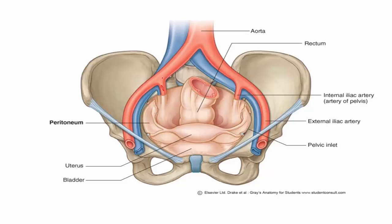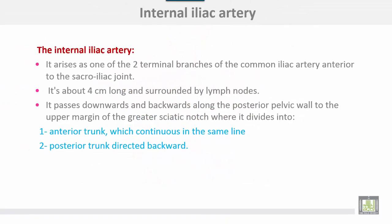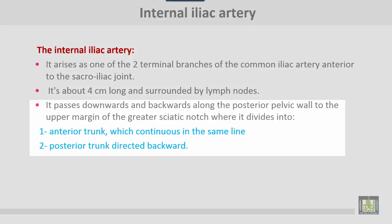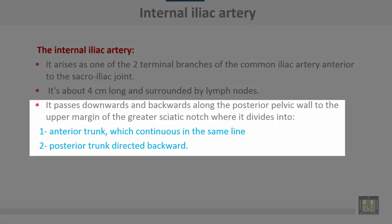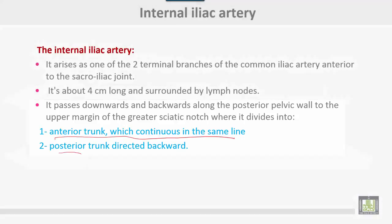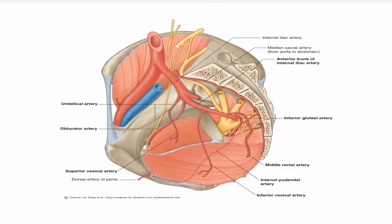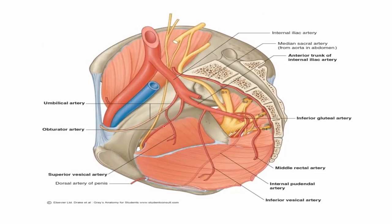This is the internal iliac artery, and this is also the internal iliac vein. The internal iliac artery arises as one of the two terminal branches of the common iliac artery, anterior to the sacroiliac joint. It is about 4 centimeters long and surrounded by lymph nodes. It passes downwards and backwards along the posterior pelvic wall to the upper margin of the greater sciatic notch, where it divides into an anterior trunk continuing in the same line, and a posterior trunk directed backward.